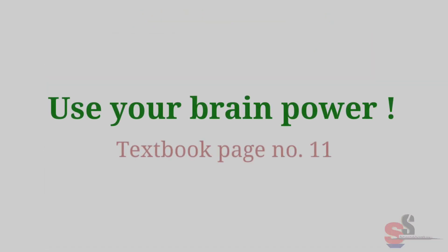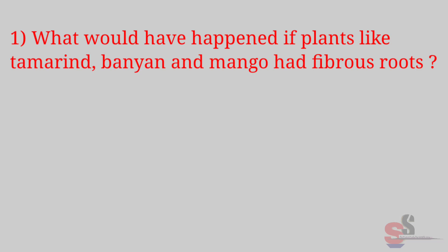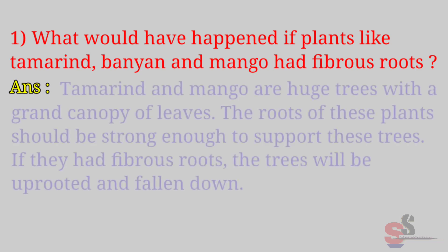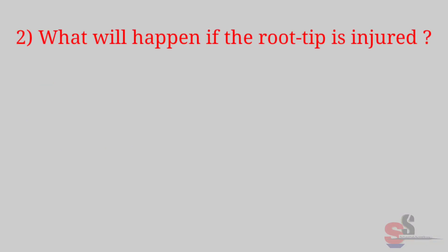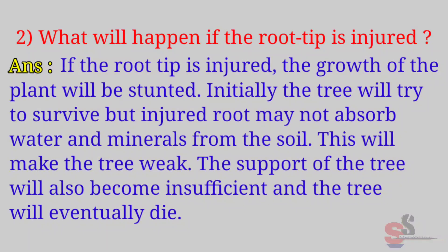Use your brain power — Textbook page number 11. First, what would have happened if plants like tamarind, banyan, and mango had fibrous roots? Answer: Tamarind and mango are huge trees with a grand canopy of leaves. The roots of these plants should be strong enough to support these trees. If they had fibrous roots, the trees would be uprooted and fall down. Second, what will happen if the root tip is injured? Answer: If the root tip is injured, the growth of the plant will be stunted. The tree will try to survive but the injured root may not absorb water and minerals from the soil, making the tree weak. The support of the tree will also become insufficient and the tree will eventually die.